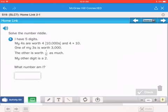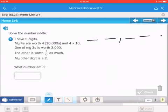Another one. I have 5 digits. So I'm drawing my 5 lines. 1, 2, 3, 4, 5. My 4s are worth 4 times 10,000. So that's in the 10,000s place. And then, 4 times 10. So that's in the 10s place. So I've got my 4s placed.